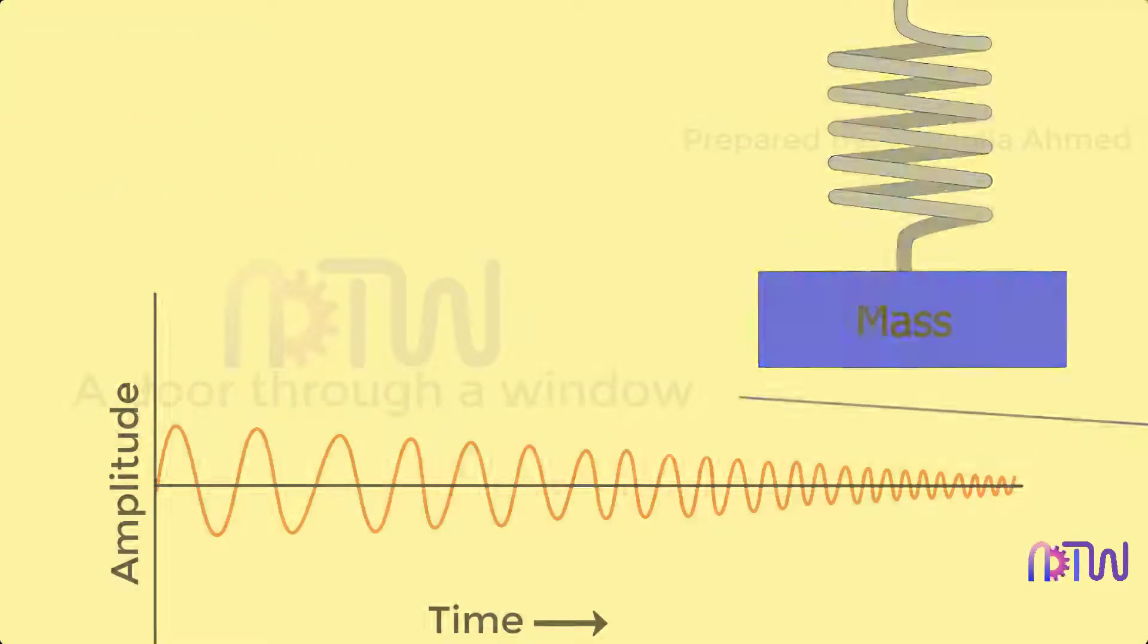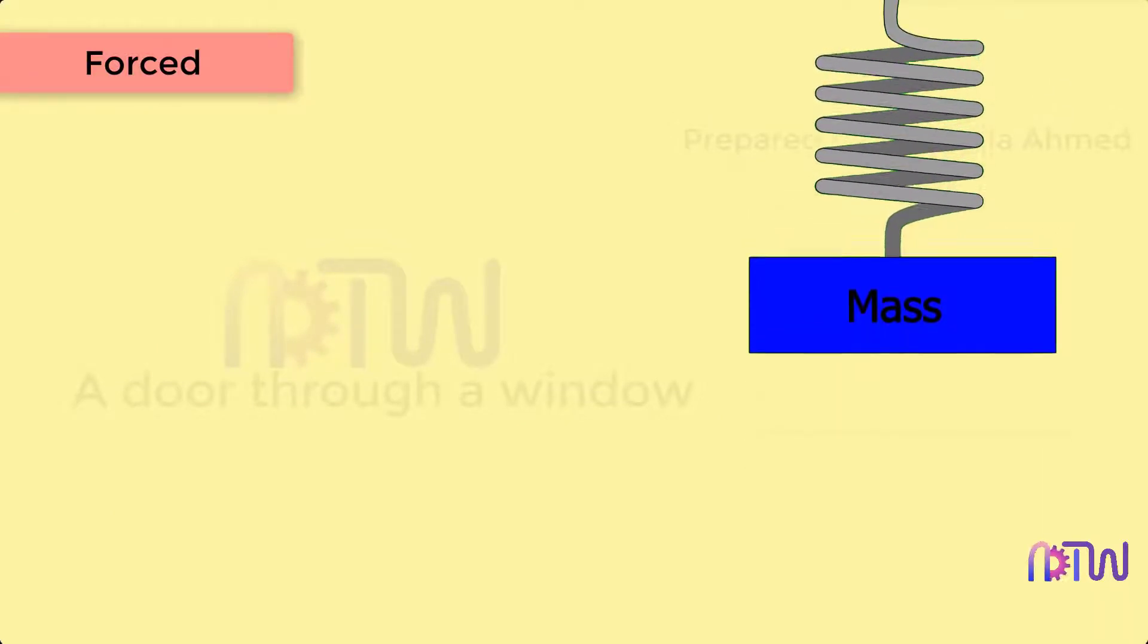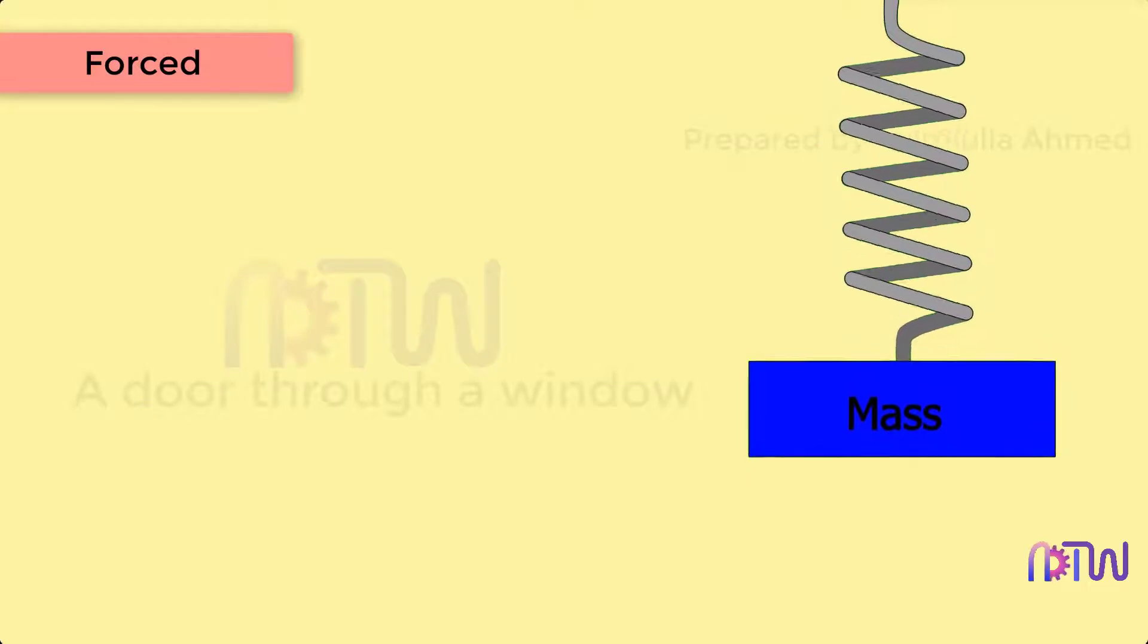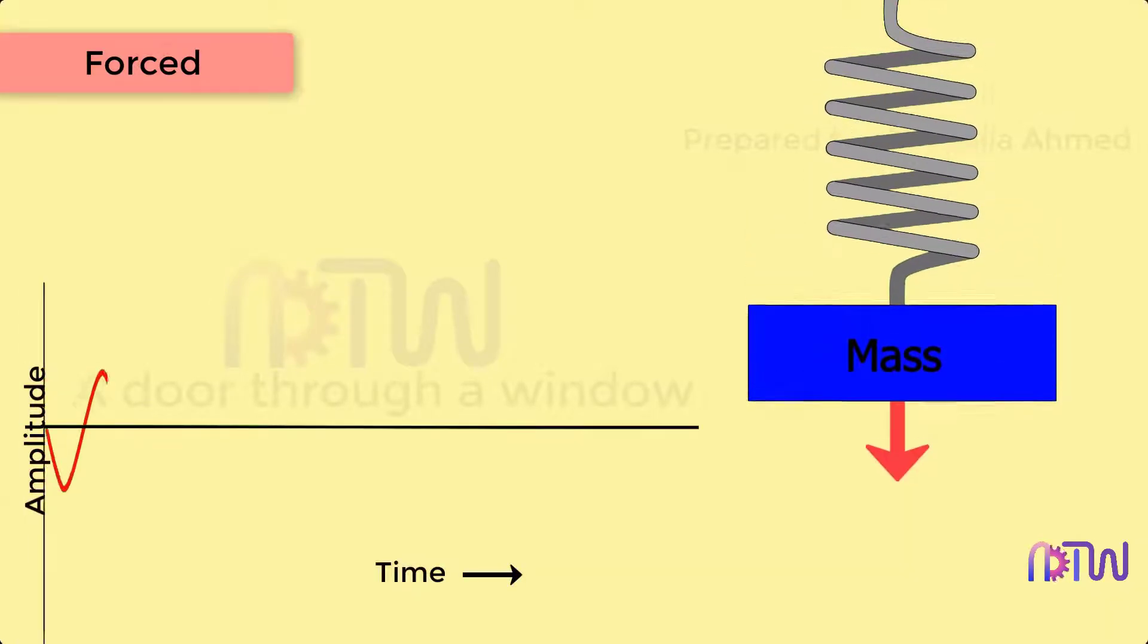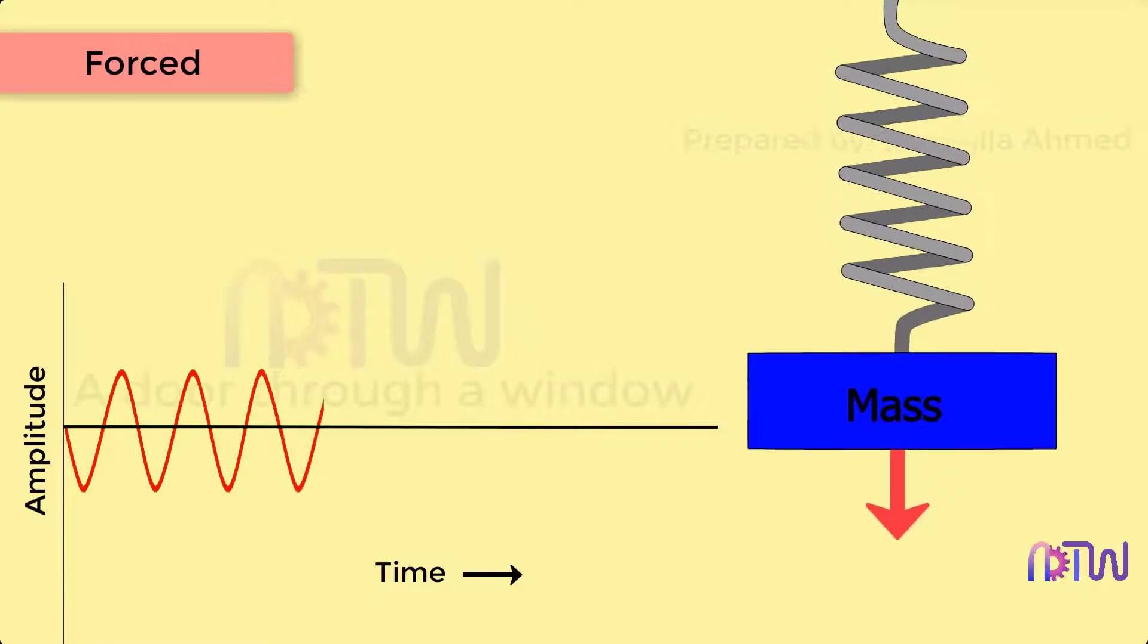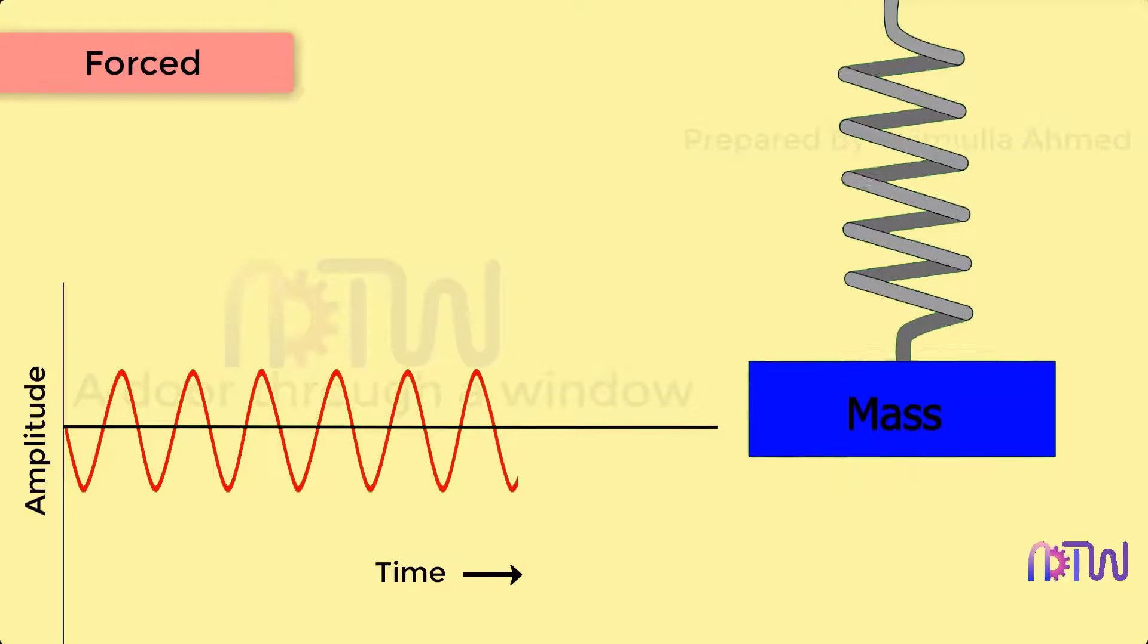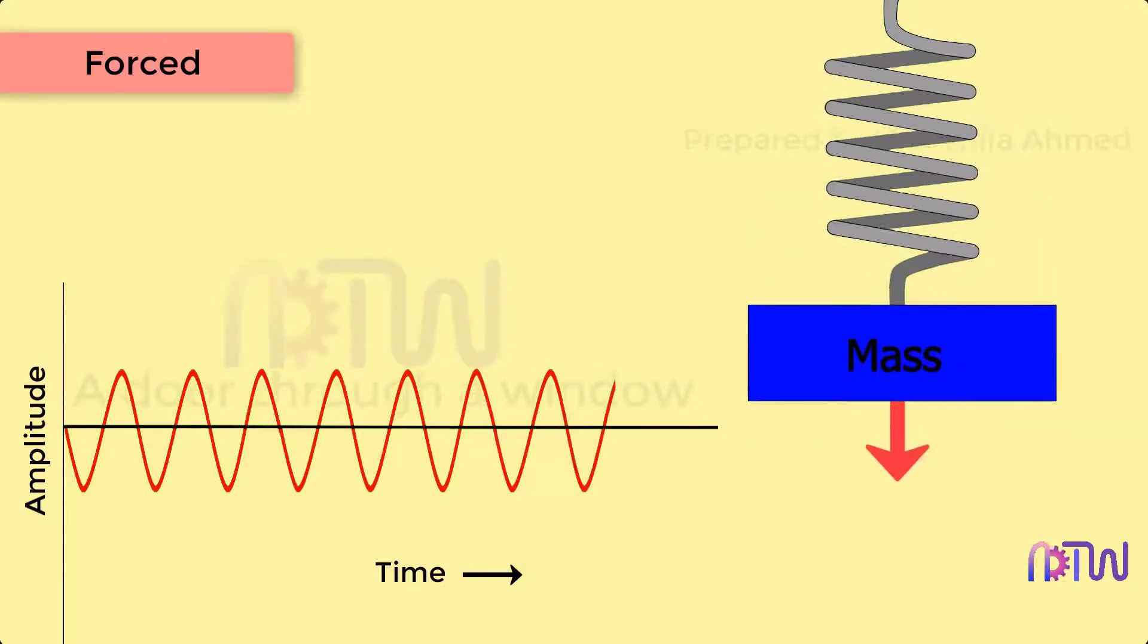Forced vibration: When a body vibrates under the influence of external force, the body is said to be undergoing forced vibration. The external force is applied to the body as a periodic disturbing force created by unbalance. This has the same frequency as the applied force. Here it is observed that the amplitude remains constant with respect to time.